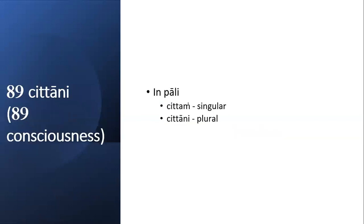A clarification on Pali terminology: the word chitani. In Pali, the singular form is chittam, so one consciousness is called chittam. The plural form, multiple consciousness, is called chitani. So if you see the word chittam it refers to one consciousness, and chitani refers to multiple consciousness.